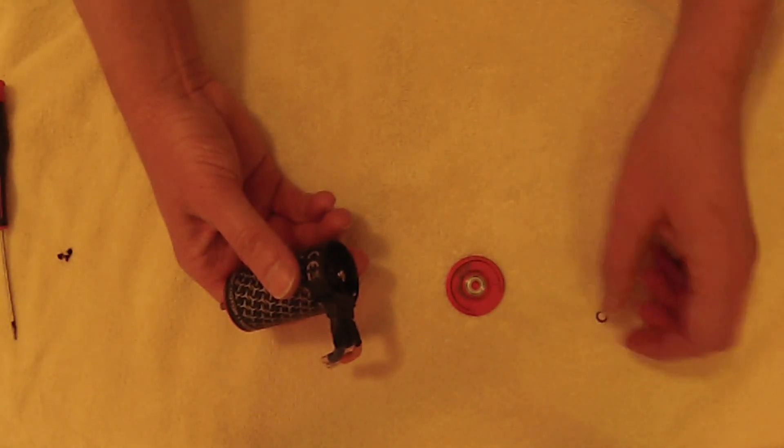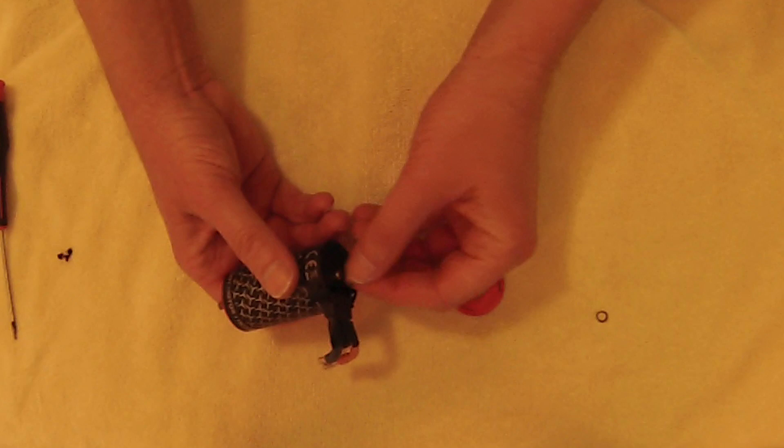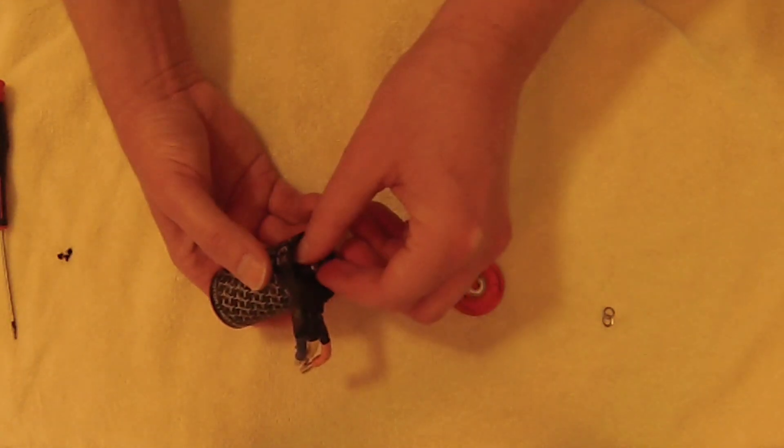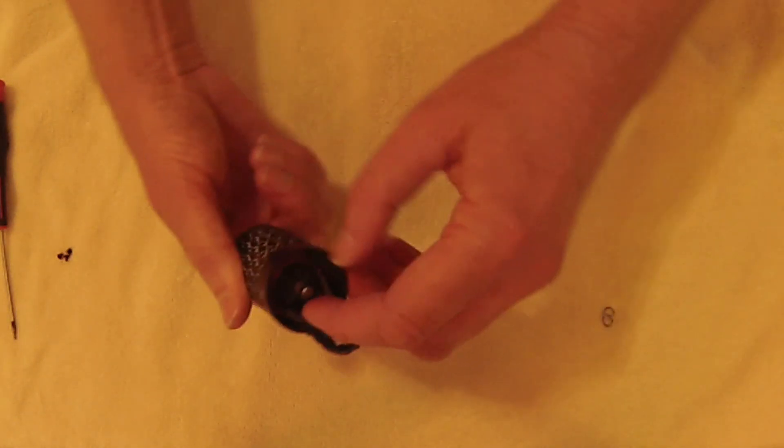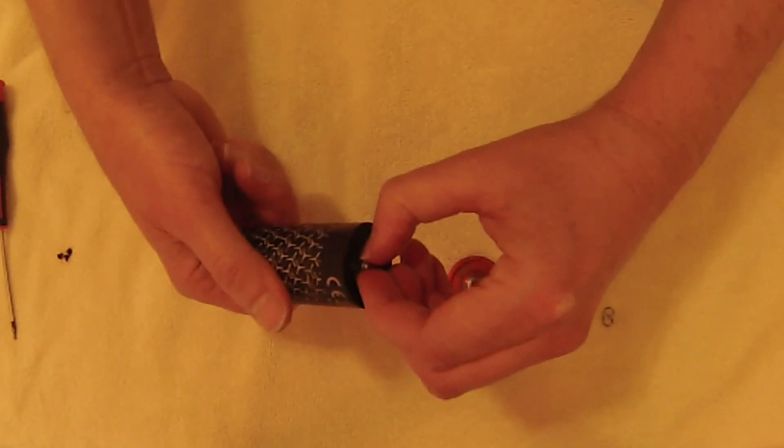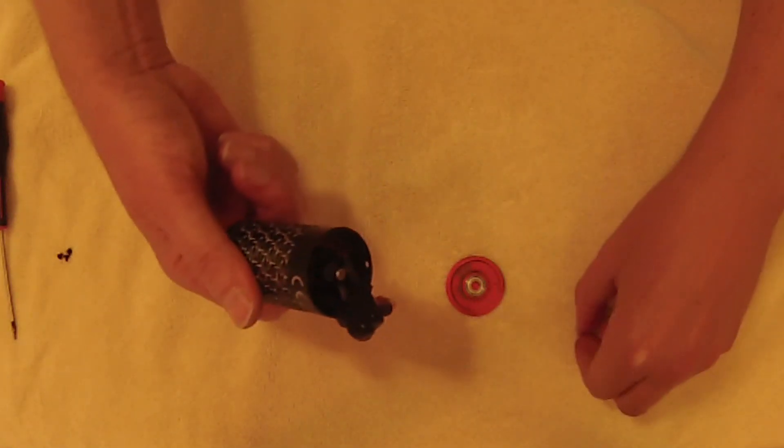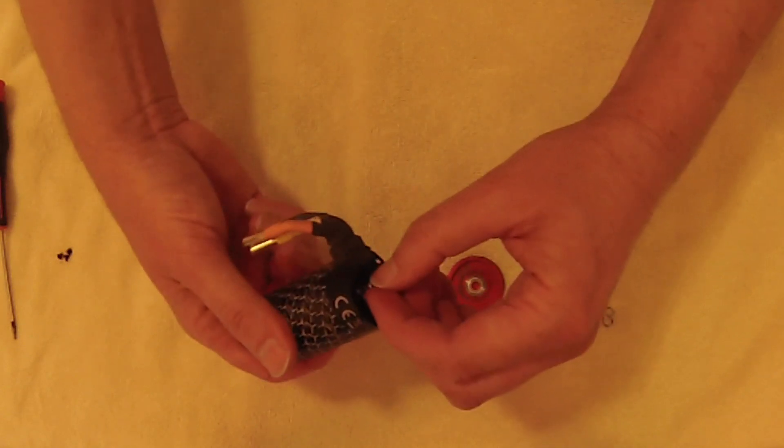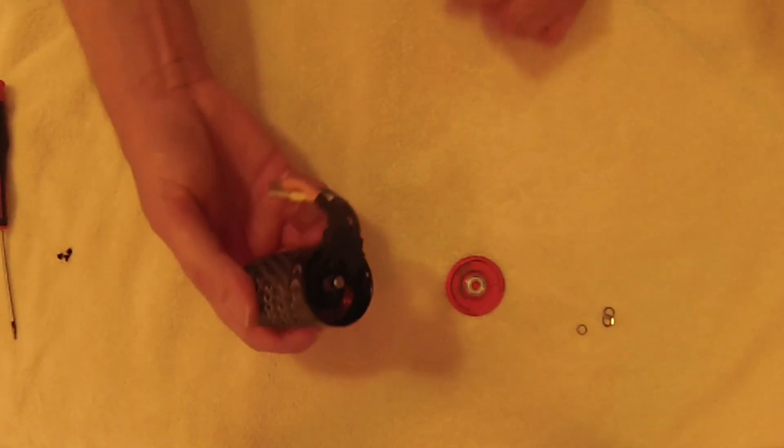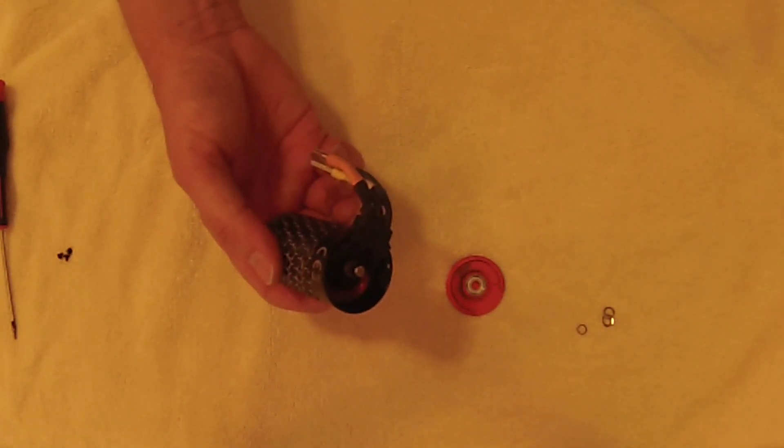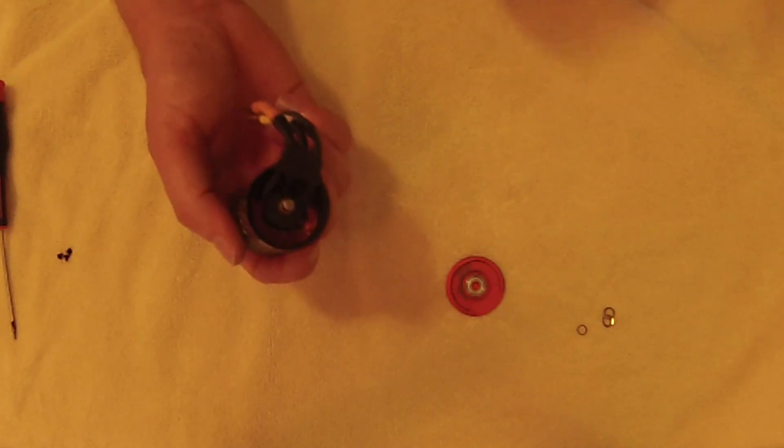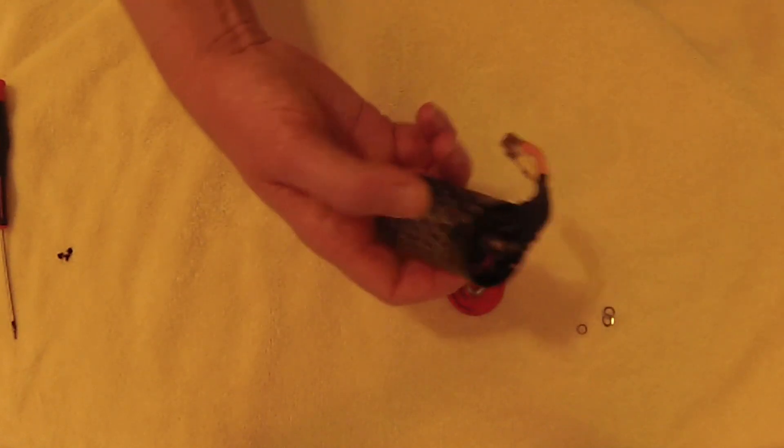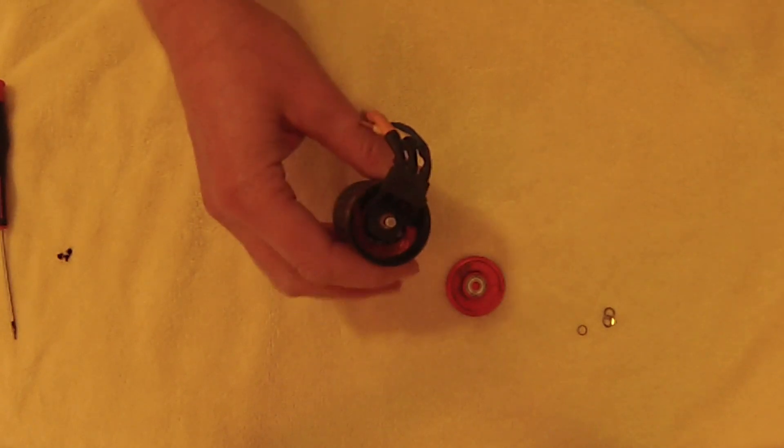Take note of how those little washers are situated and how many of them are there. It looks like there was one little round circular washer at the bottom for me and then two other washers. When you do this, just pull it off more carefully than what I did and then take a mental note to yourself the positioning of these things before you put it back in.